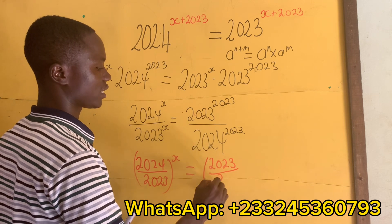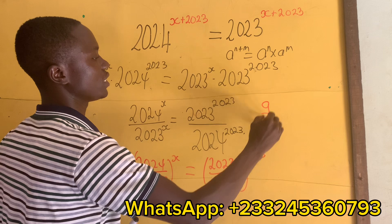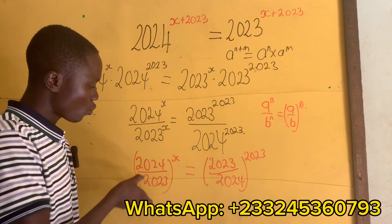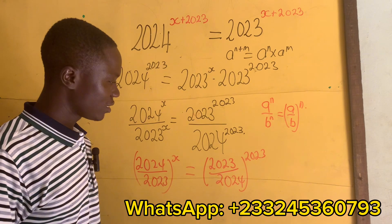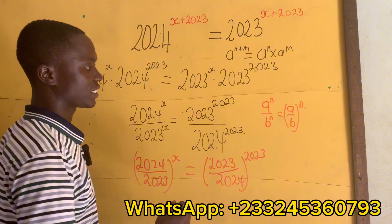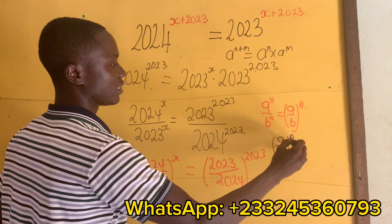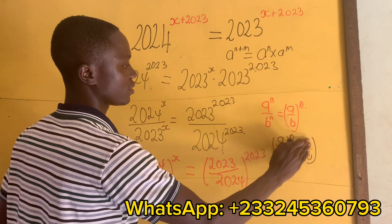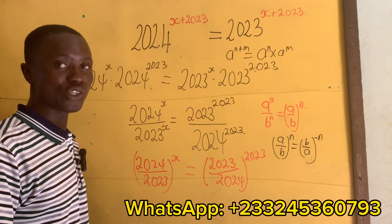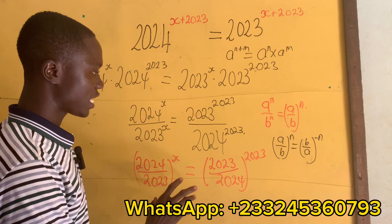We have 2024 to the power 2023. Remember, if I have (a/b) to the power n, then it's (a/b) to the power n. What is inside here is not equal to what is inside here. Should we take logarithm? No, we're not going to take any logarithm. Let's use the law of exponents: if I have (a/b) to the power n, then it's equal to (b/a) to the power negative n. Check the description for a video on how to evaluate the law of exponents to improve your understanding.